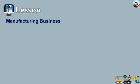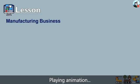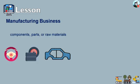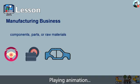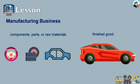The manufacturing business is any business that uses components, parts, or raw materials to make a finished product. For example, if the finished product is a car, the manufacturing business will gather components, parts, or raw materials like a steering wheel, tires, and other parts of the car, and then create this product — the finished product being the car.